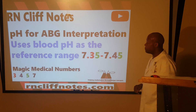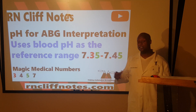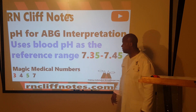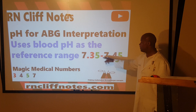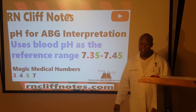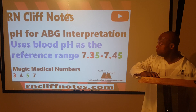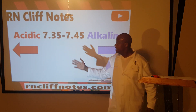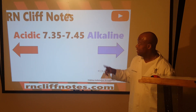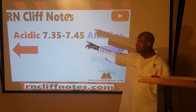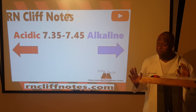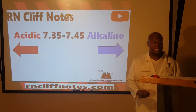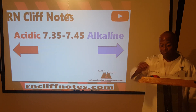Revisiting our magical numbers from the first video — 3, 4, 5, and 7 — these keep coming up. Our blood pH range is 7.35 to 7.45. If the pH is less than 7.35, we consider that acidic when talking about blood. If it's higher than 7.45, we call that alkaline, base, or basic.